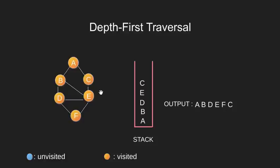Now we look at the adjacent unvisited nodes of C. There are no such nodes. So we pop C from the stack.